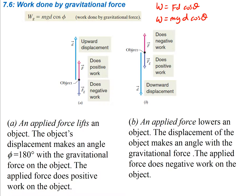A couple things we need to keep track of. An applied force that lifts an object is going in the upward direction. The object's displacement makes an angle of 180 degrees with the gravitational force. The applied force does positive work on the object because the applied force is in the direction of the displacement — since the angle between those is zero, you get positive work done.